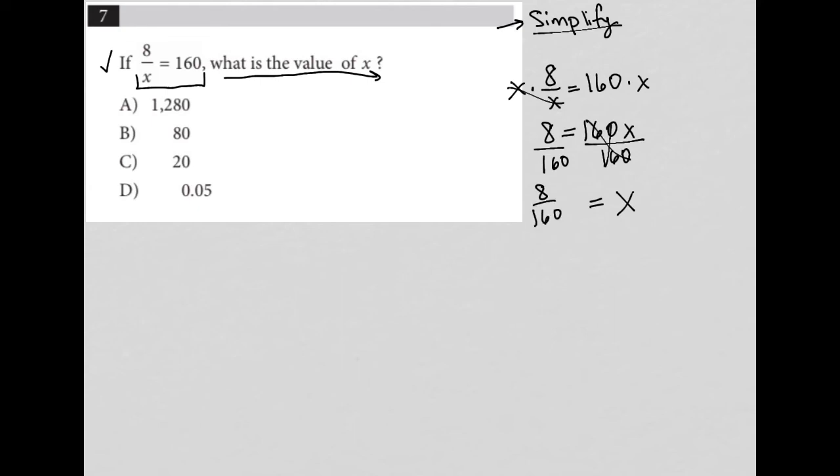So this is not the calculator section, so I can't throw that into my calculator. But what I can do is look at the answer choices and see there's no way that 8 divided by 160 is 1,280. There's no way that it's 80. There's no way that it's 20. This is definitely going to be a decimal. So choice D is the correct answer.